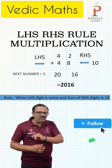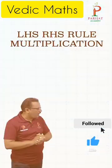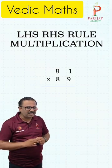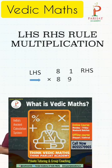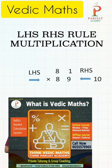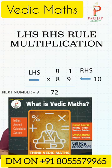Let's take another example: 81 into 89. Again, observe — make two parts, left-hand side and right-hand side. The left-hand side digit 8 is common, and again the addition of 1 and 9 becomes 10. The same pattern exists. Multiply 8 by its next number 9: 8 times 9 becomes 72.